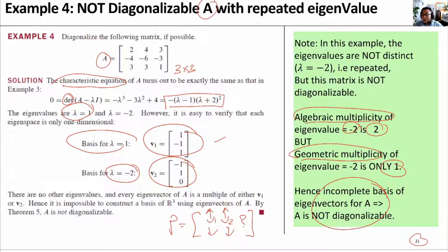Since P has no independent eigenvector for V3, then P is not invertible.